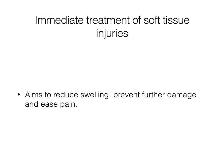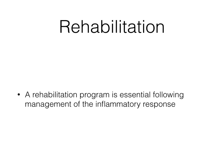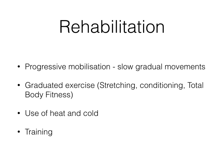For immediate treatment of soft tissue injuries — the acute inflammation stage — the aim is to reduce swelling, prevent further damage, and ease pain, achieved through RISA. For medium and long-term treatment throughout the regeneration and remodelling phases, the aim is to restore flexibility, regain full function, prevent recurrence, and return the athlete to the field as soon as possible. Rehabilitation ensures normal function is achieved through progressive mobilisation, graduated exercise such as stretching, conditioning, total body fitness, and the use of heat and cold to stimulate muscle tissue and encourage blood flow.